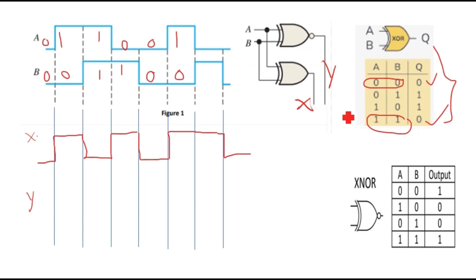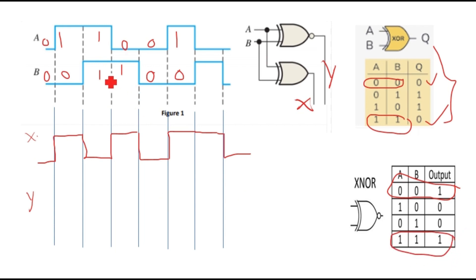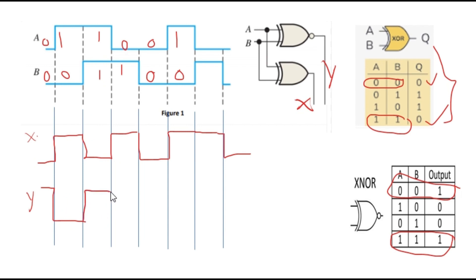Now let's draw the waveform for the XNOR gate. For XNOR, when both inputs are the same you get output 1, and when inputs are different you get output 0. Since the first inputs are same (0,0), we start with output 1. Then 1,1 gives 1, and 0,1 gives 0.